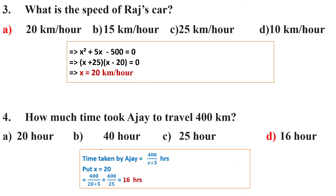Third question: what is the speed of Raj's car? Using the equation from the second question, we factorize it — or apply the completing the square method or the quadratic formula. We get x = 20 km per hour. The other root is x = −25, but a negative value is not applicable here. So the speed of Raj's car is 20 km per hour. Option A is correct.